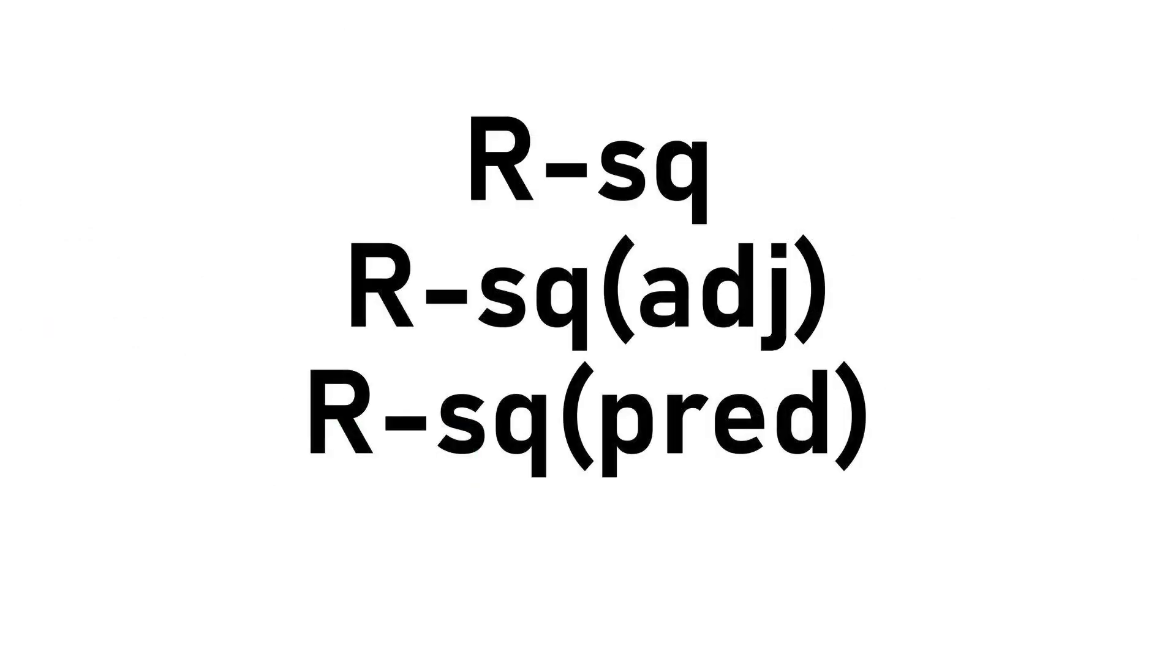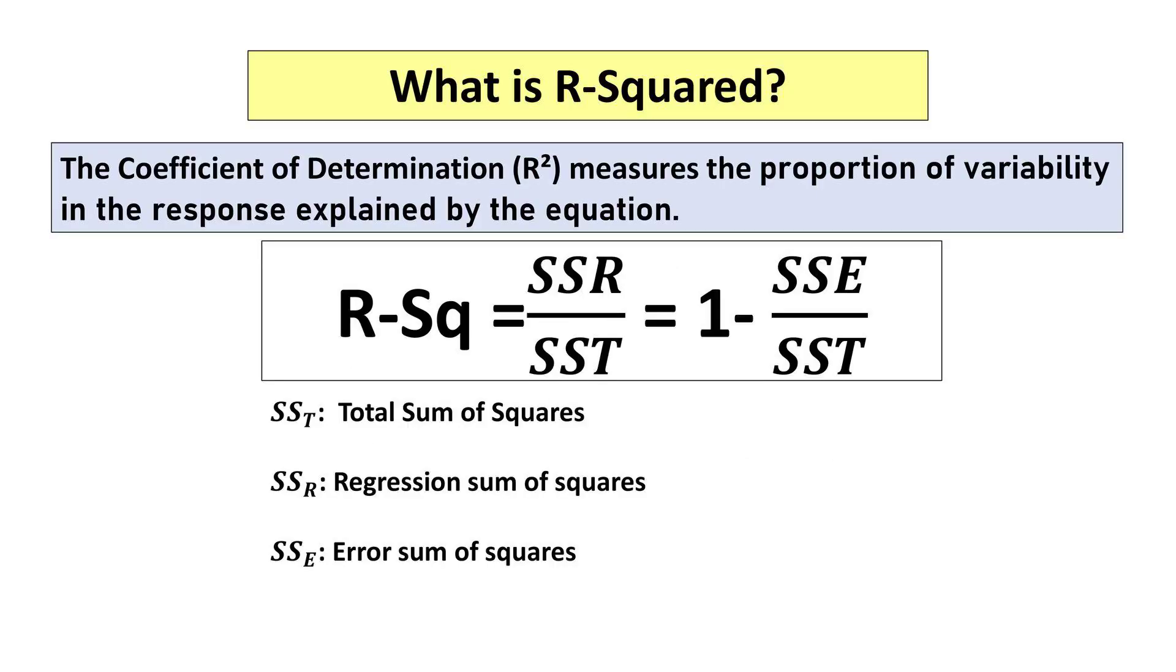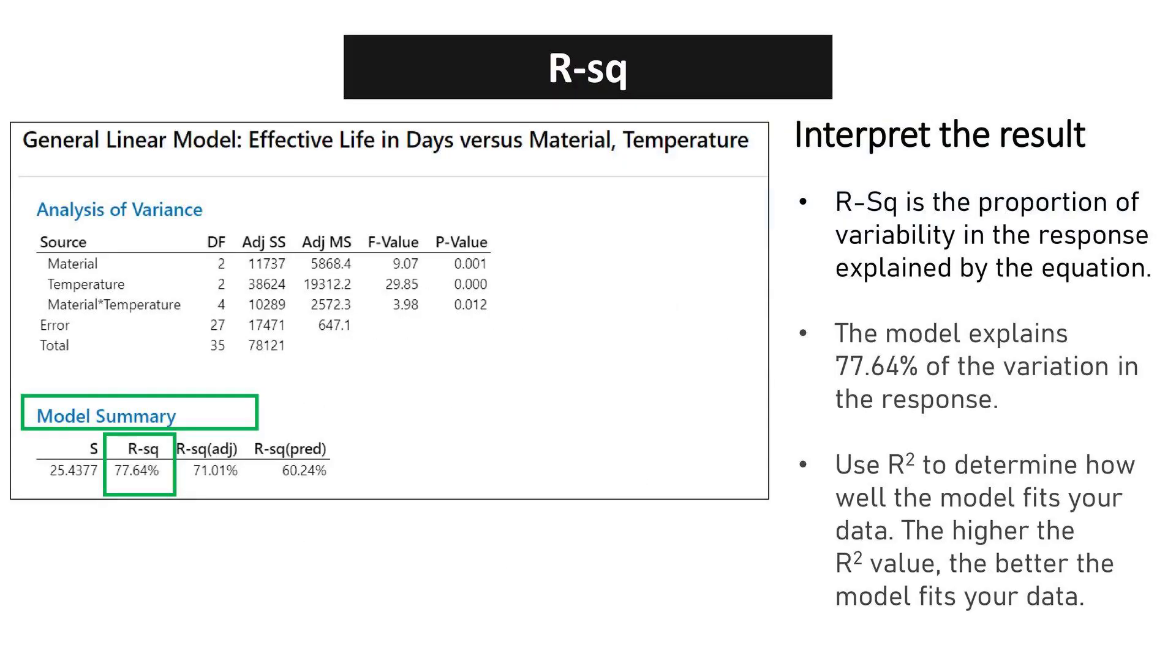R-squared, R-squared Adjusted and R-squared Predicted. R-squared measures the proportion of variability in the response explained by the equation. An R-squared value of 77.64% not only quantifies model fit but also reassures that the chosen factors significantly explain the variability. Use R-squared to determine how well the model fits your data. The higher the R-squared value, the better the model fits your data.